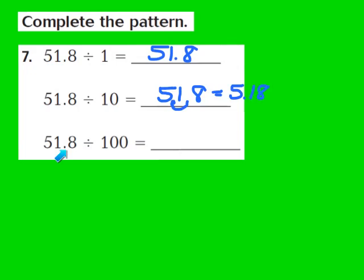Now in the last part of our pattern, we have 51 and 8 tenths being divided by 100. In 100, there are two zeros. So I'm going to move the decimal point two places to the left — one, two places — so the decimal now falls in front of the 5. My quotient turns out to be 518 thousandths. Because once again, as you divide by increasing powers of 10, the decimal point moves one place to the left for each increasing power of 10.